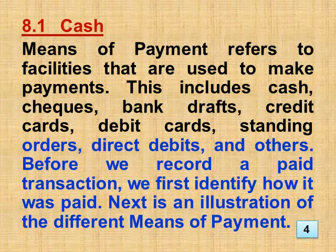Section 8.1: Cash. Means of payment refers to facilities that are used to make payments. This includes cash, cheques, bank drafts, credit cards, debit cards, standing orders, direct debits, and others. Before we record a paid transaction, we first identify how it was paid. Next is an illustration of the difference.